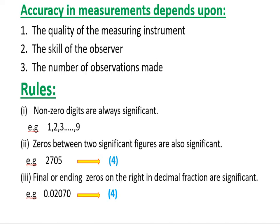Third rule: final or ending zeros on the right side of a decimal point are significant. If we have a zero on the right side of a decimal, it is significant. How many figures are significant in such a case? Four.